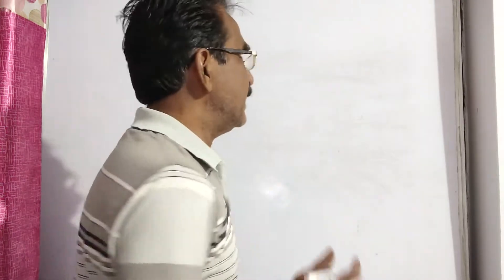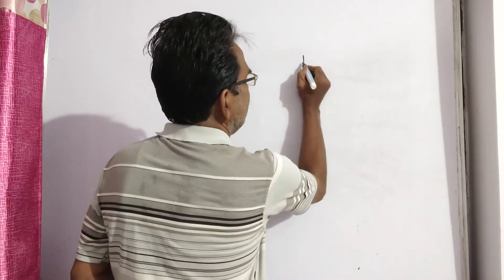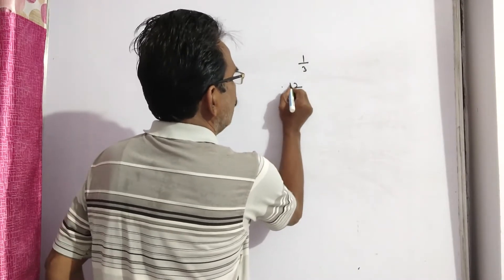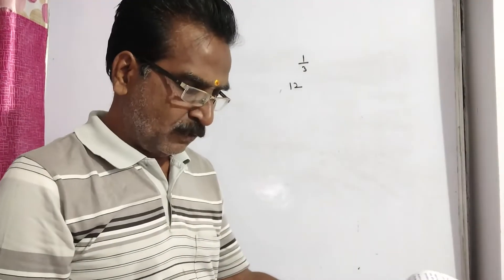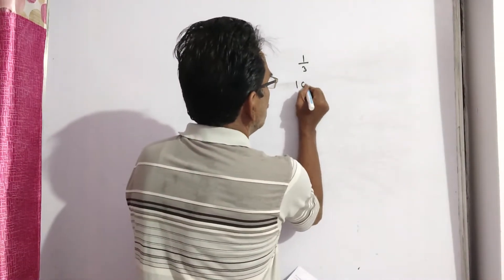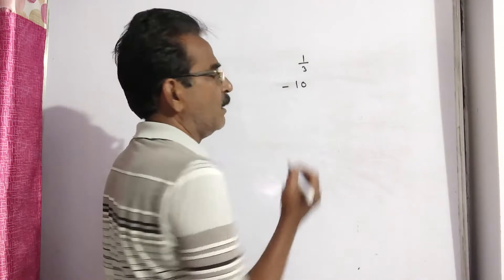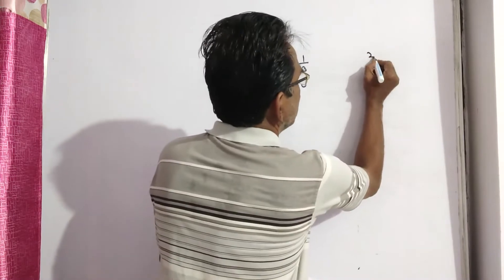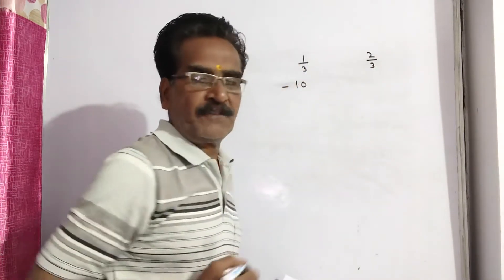See, he is selling one third of the goods at 10 percent loss. Loss means I am putting minus sign. And remaining two by three of the goods are sold at, you have to find this, let us say x percent.